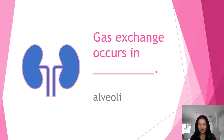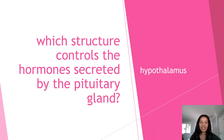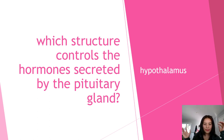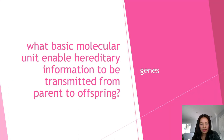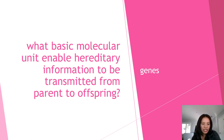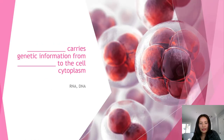Gas exchange occurs in the alveoli of the lungs. The structure that controls the hormones secreted by the pituitary gland is the hypothalamus. The interstitial fluid is found in the tissues around the cell. The basic molecular unit that enables hereditary information to be transmitted from parents to offspring is the gene.